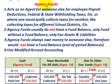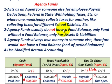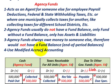The key features of the agency fund: first, it acts as an agent for employee payroll deductions — federal and state withholding taxes, insurances, and so forth — or it's where one municipality collects taxes for another, like collecting taxes for different school districts. Second, agency funds usually do not have a fund balance. It's the only fund without a fund balance — it only has assets and liabilities. Agency funds always owe money to someone else, so they would not have a fund balance. They may have an end-of-period balance, but no fund balance. Agency funds use modified accrual accounting.